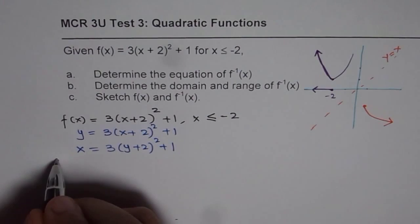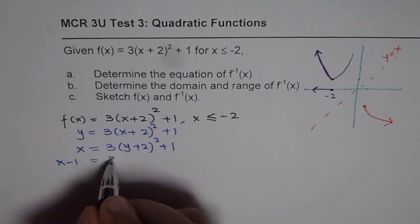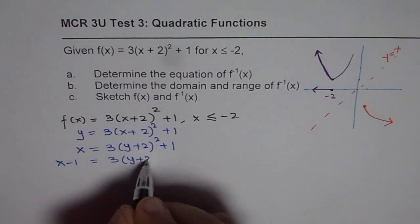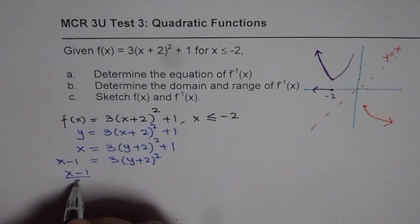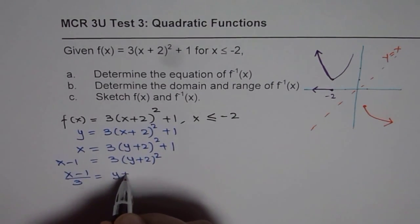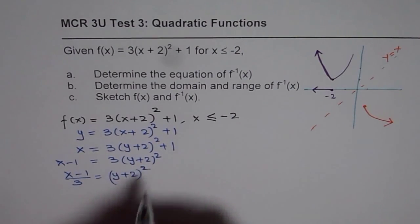So we get x = 3(y + 2)² + 1. And then we have to rearrange. We will bring 1 on this side. x - 1 = 3(y + 2)². Then we divide by 3. (x - 1)/3 = (y + 2)².